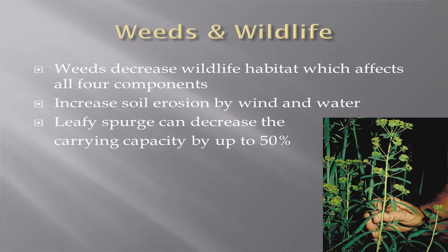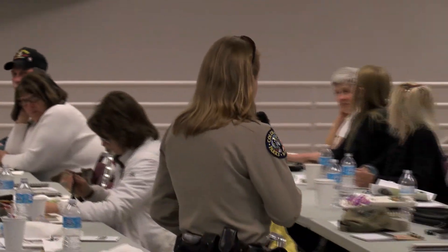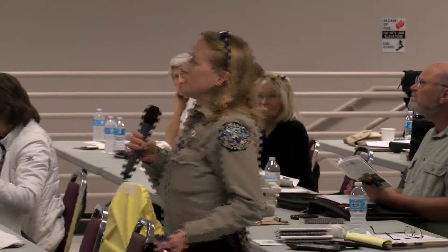That picture in the corner is leafy spurge, because that's one of the things I'm going to talk about. Weeds end up decreasing wildlife habitat, which affects all four components. That is one of the biggest things that at Parks and Wildlife we are concerned about — habitat. If we decrease habitat, we're automatically decreasing the amount of wildlife that can be sustained in that area. Weeds also increase soil erosion by wind and water, which causes a huge effect when it comes to wildlife.